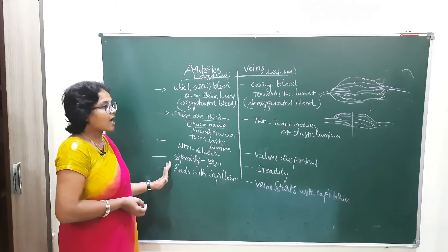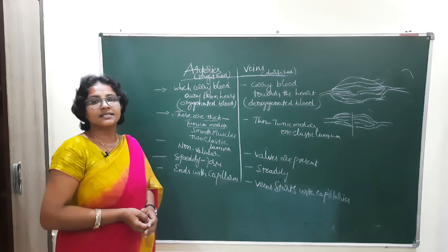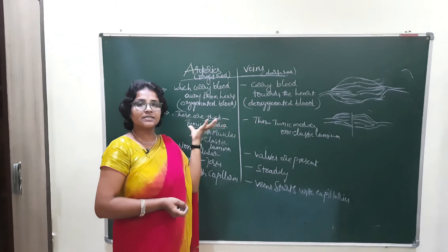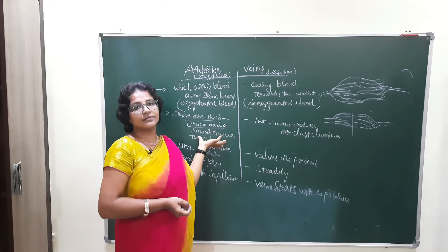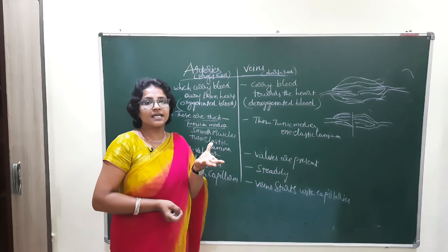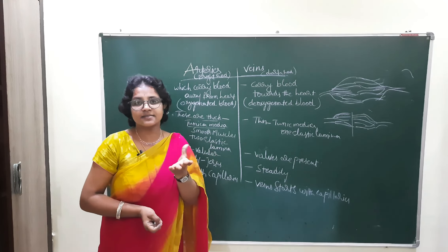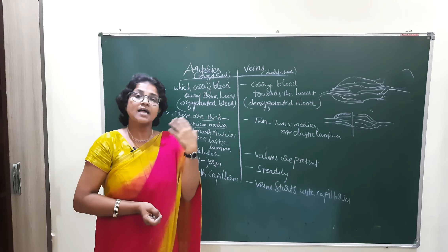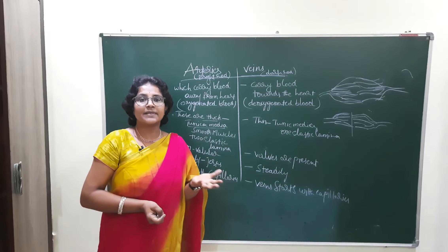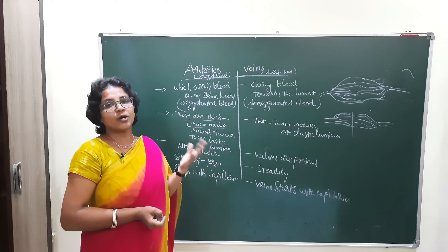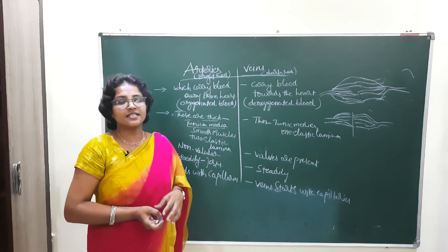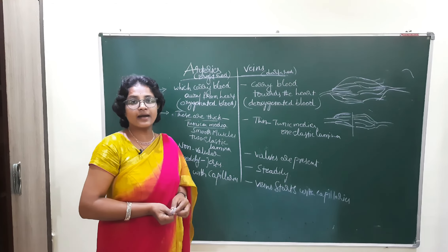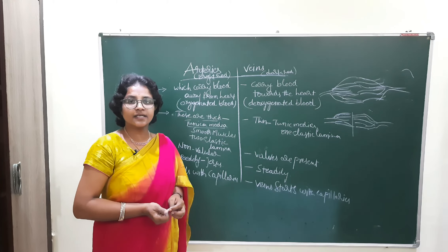That is about the arteries and veins. We have now nearly completed the circulatory system — fluids and circulation. Next, we will continue with other chapters. There are also disorders to cover, such as coronary artery disease and different types of disorders.